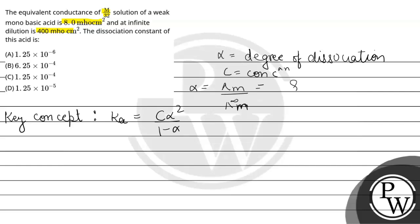Lambda M given is 8. Lambda naught M given is 400. So alpha equals 8/400, which is equal to 0.02, that is 2 × 10^-2.